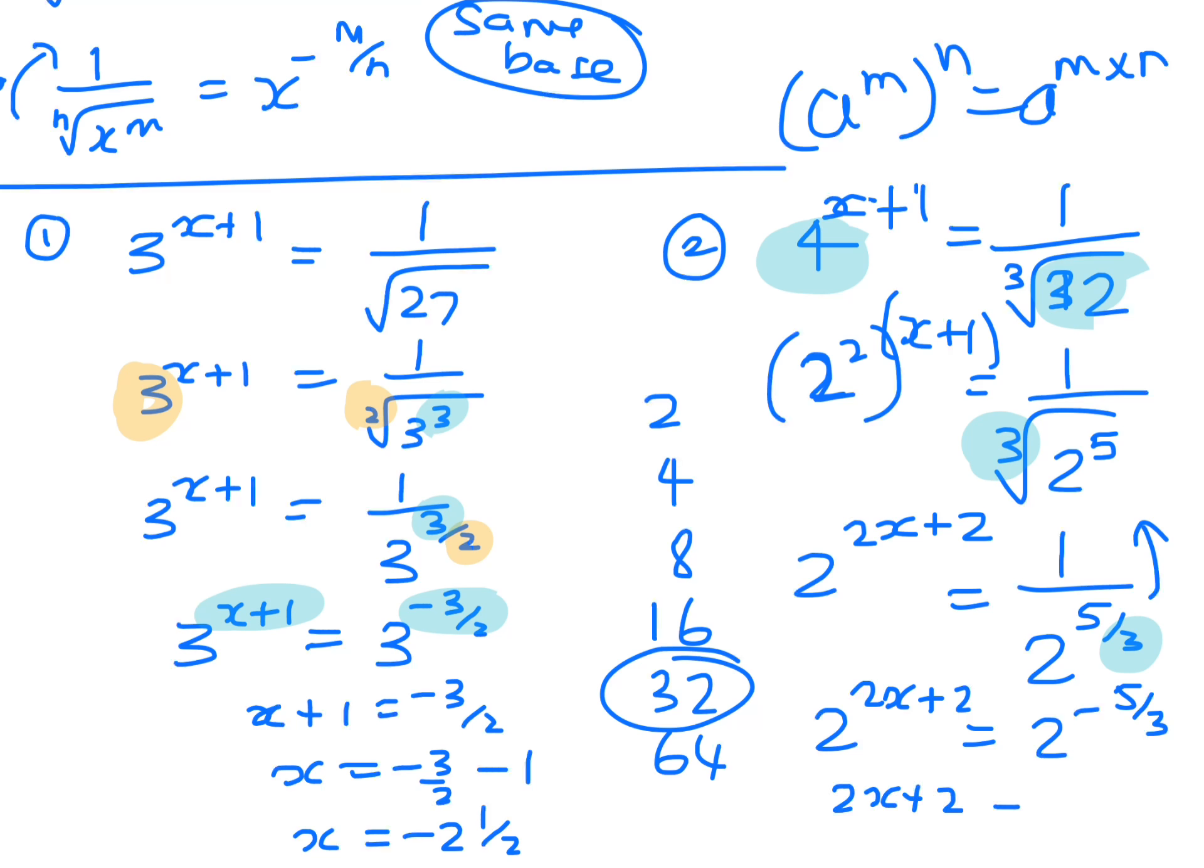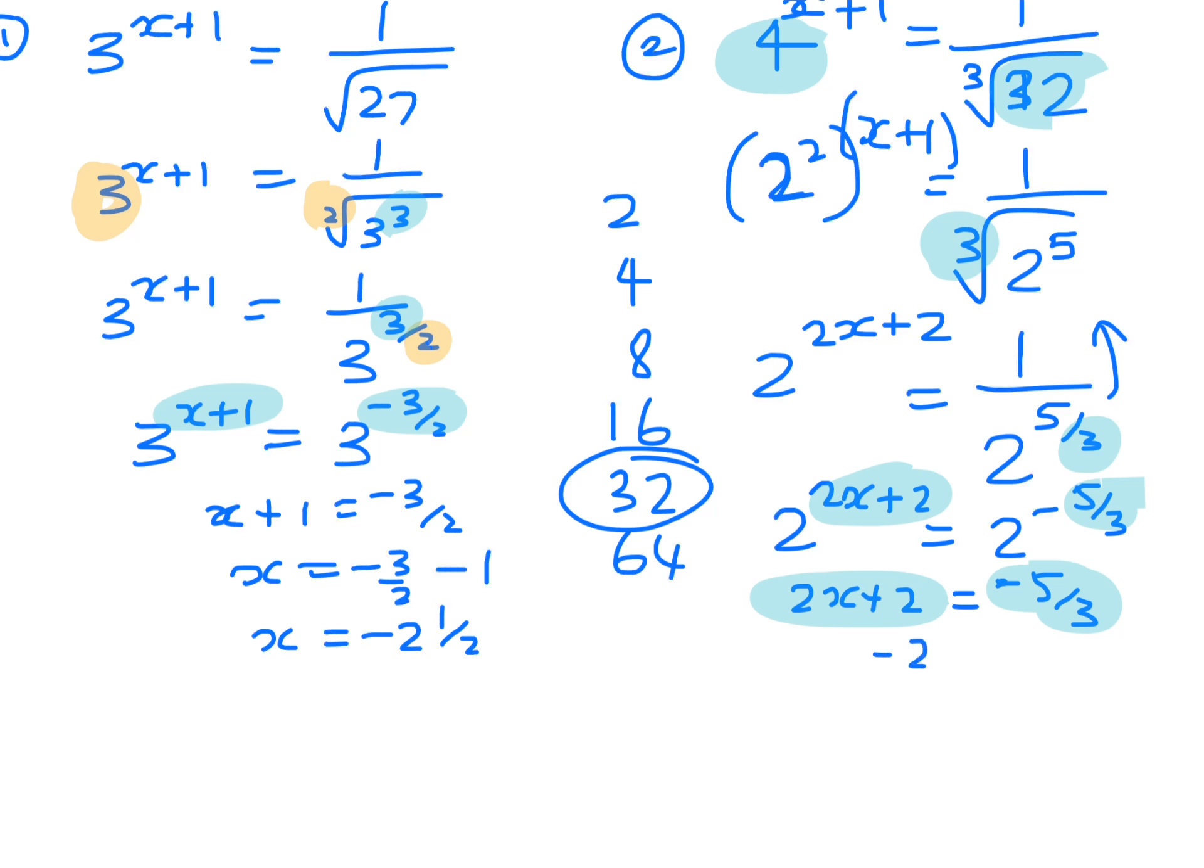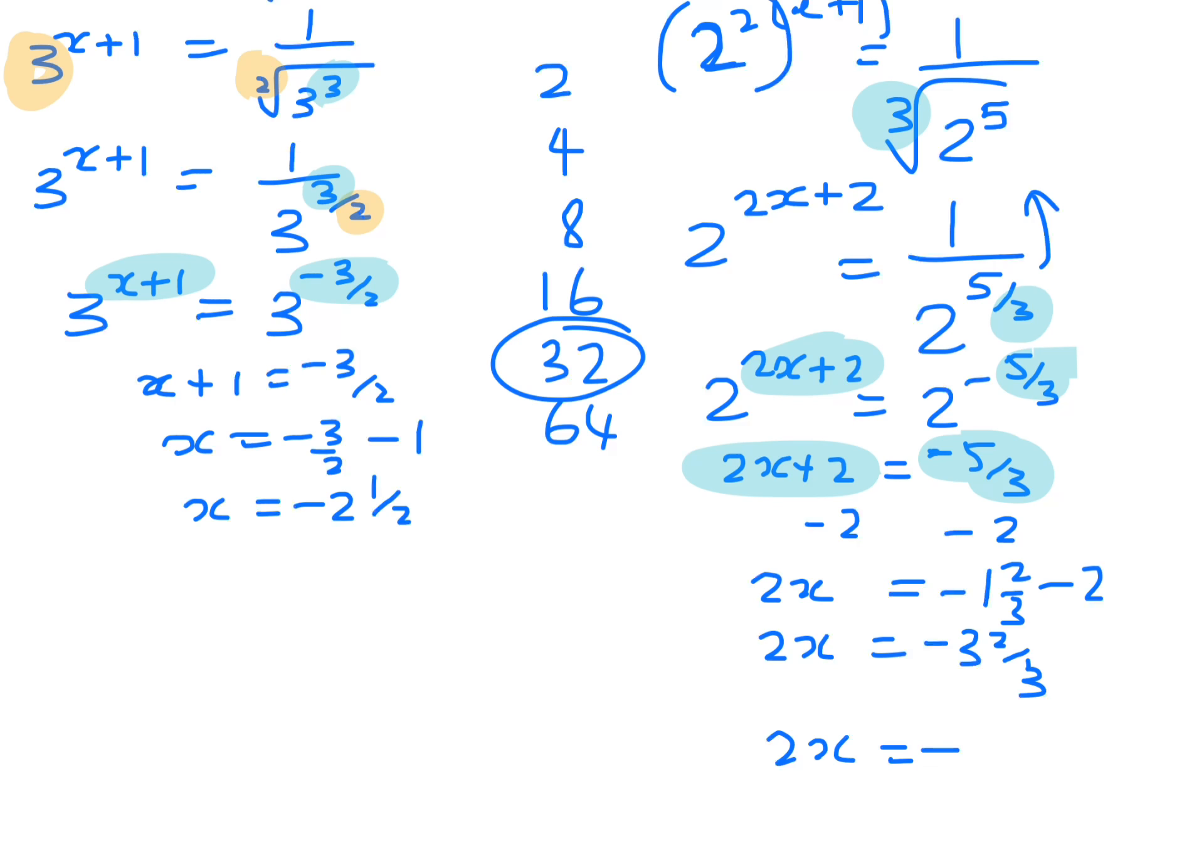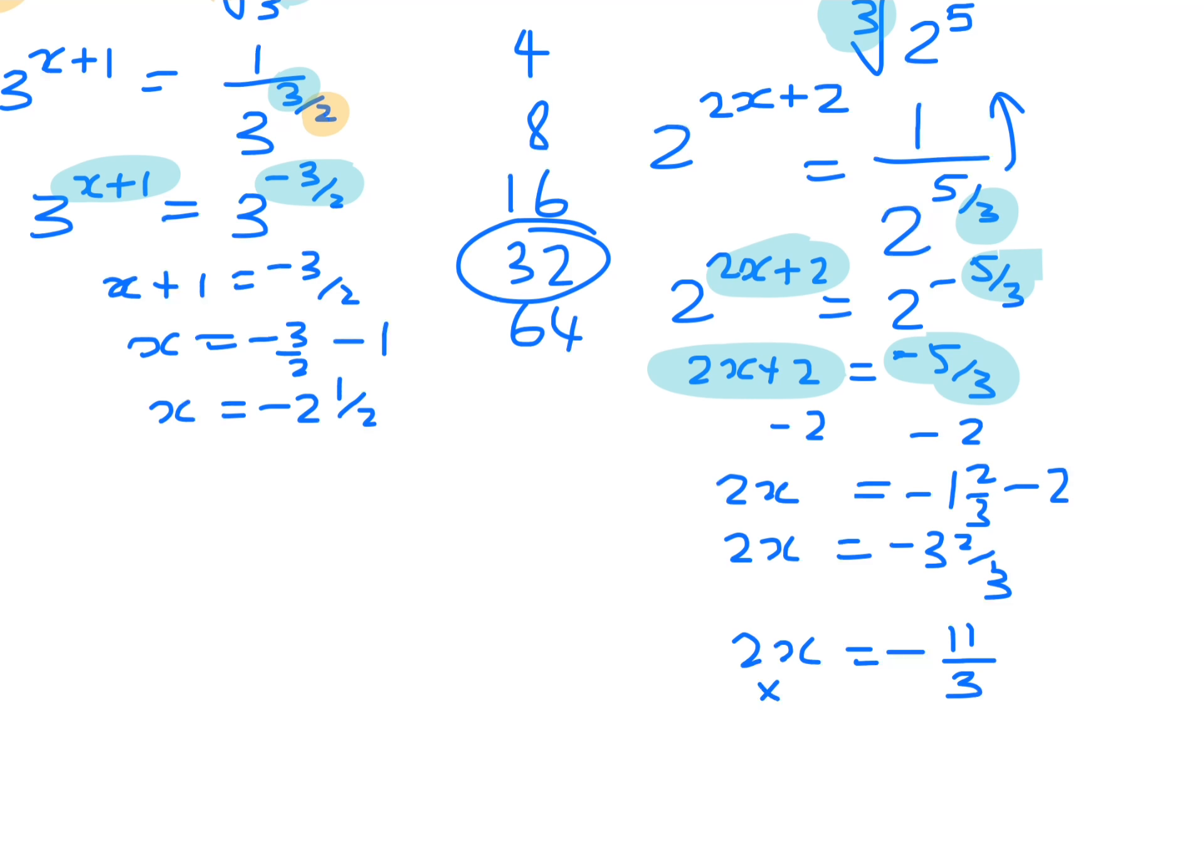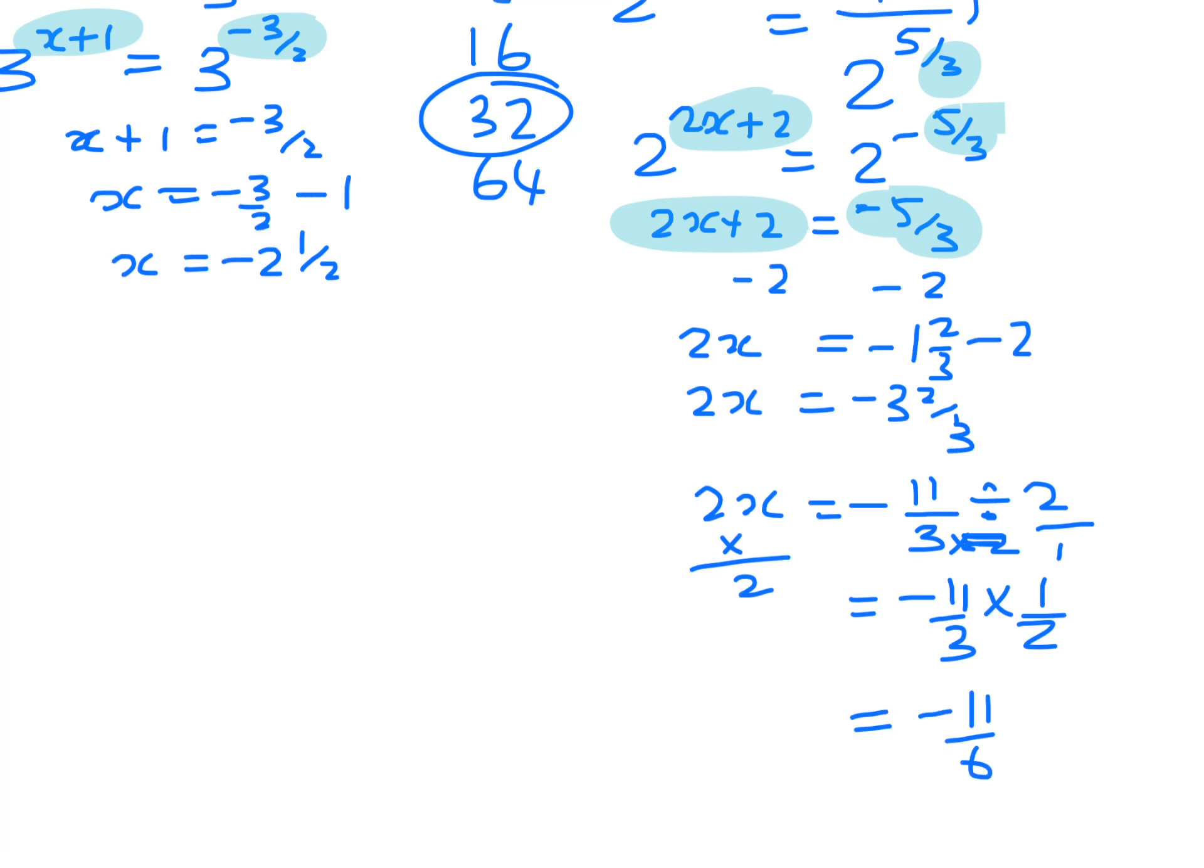So that means that 2x plus 2 now will equal minus 5 on 3, because basically you just have to equate the indices. So that means now if you take away 2 from both sides, that's minus 1 and 2 thirds take away 2. So 2x equals minus 3 and 2 thirds, and just because I don't have my calculator here, I'm just going to make that minus 9 plus 2 is 11 on 3. And then I'm just going to divide by 2, because if you divide by 2 you're just like multiplying by a half.